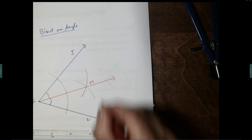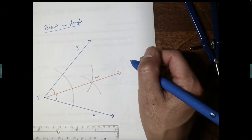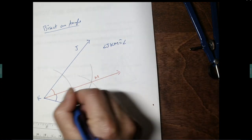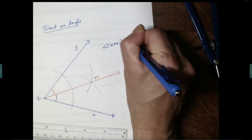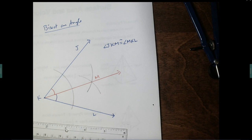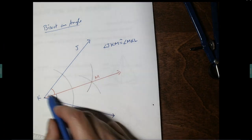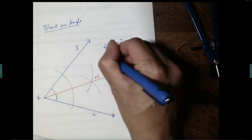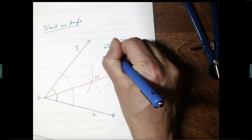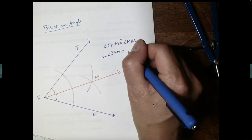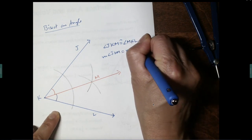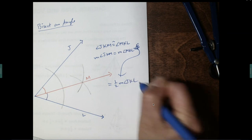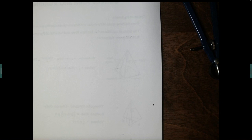Let's name the intersection point M, so we have angle JKM and angle MKL. We know that angle JKM is congruent to angle MKL. We can also write an equation: the measure of angle JKM equals the measure of angle MKL, and both equal one half the measure of angle JKL.